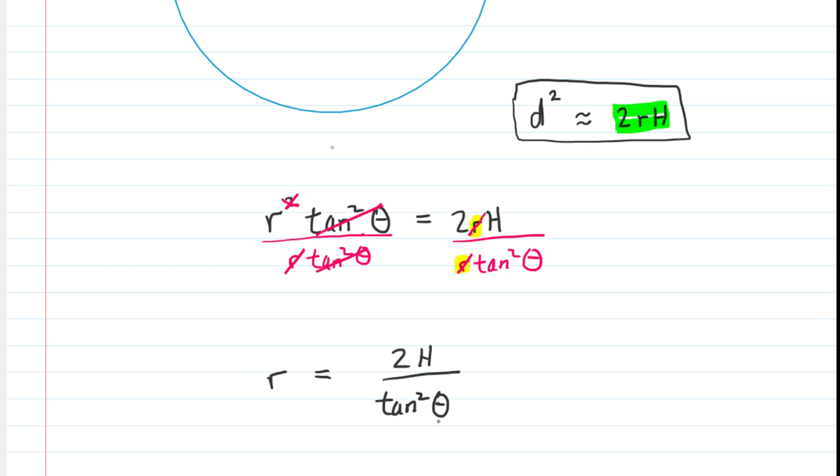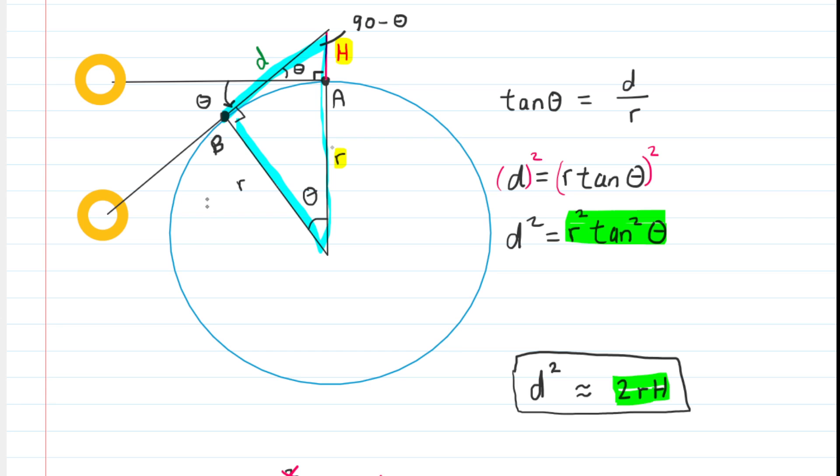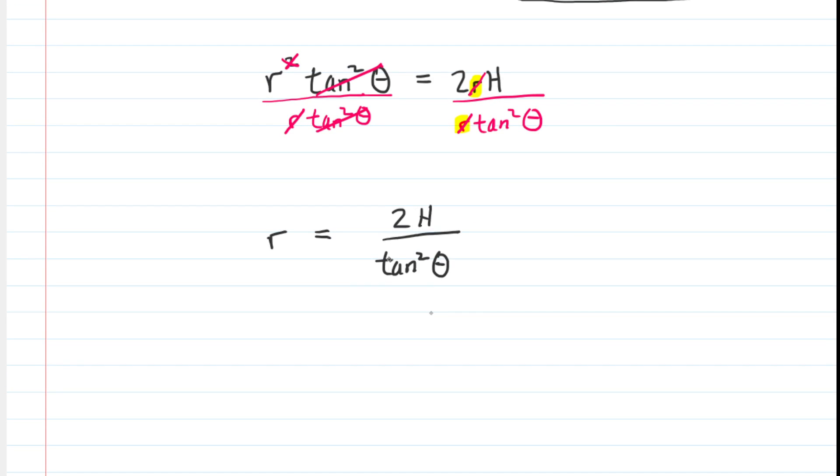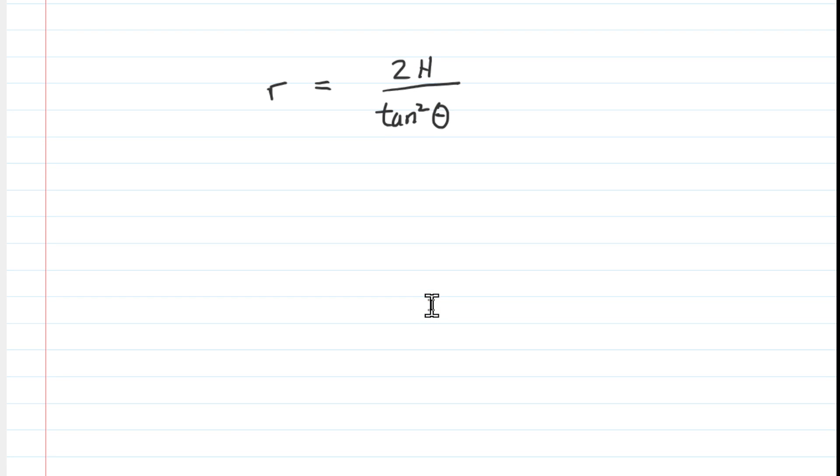Now, remember, theta is that angle that the sun swept out during its movement across the sky, basically as the Earth sort of rotates, then the sun traces out that angle theta. We need to find that angle theta. We already have the height H, but without theta, we're not going to be able to get the radius, of course. So we need that angle theta, and we can do that by setting up a proportion.